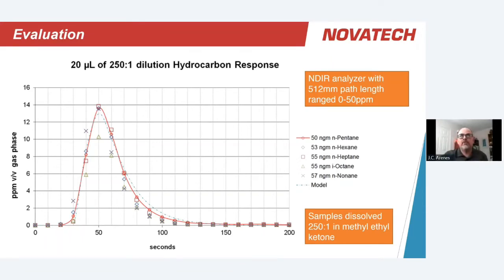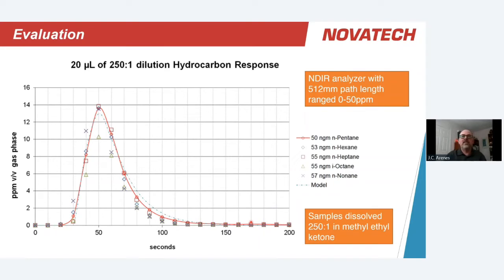These were 20-microliter dilutions at 25-to-1 ratios of hydrocarbons. We tested with pentane all the way up to nonane — C5 to C9 — measuring with an NDIR analyzer ranged 0 to 50 parts per million. We got excellent response, and all hydrocarbons followed a similar response pattern more or less in line with our modeling predictions. These first tests were very encouraging, with some fine-tuning and further testing still required to establish true performance limits.